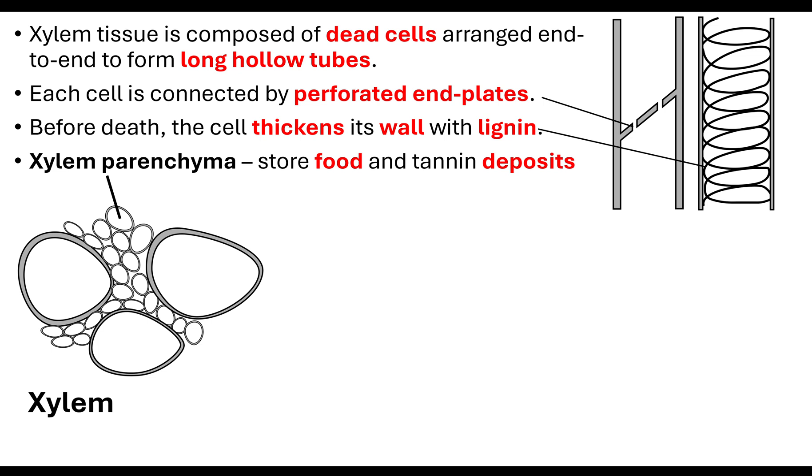Now alongside the xylem vessels what we also have are these xylem parenchyma. Xylem parenchyma are little cells surrounding the xylem vessel which are there to store food and also store tannin deposits. This is a bitter tasting chemical which is going to prevent or deter the herbivores from feeding on the plant. The xylem parenchyma are going to need to store the food, the macromolecules so that they can perform respiration to allow for the metabolic processes.